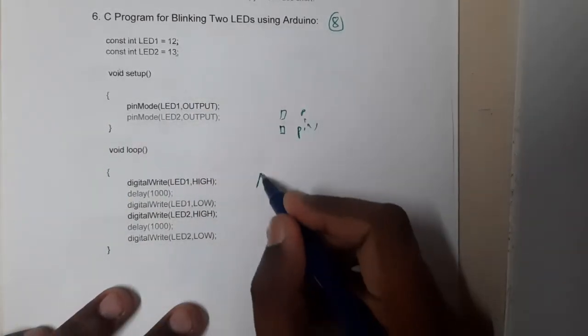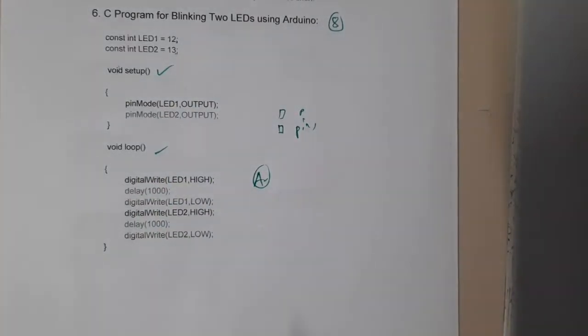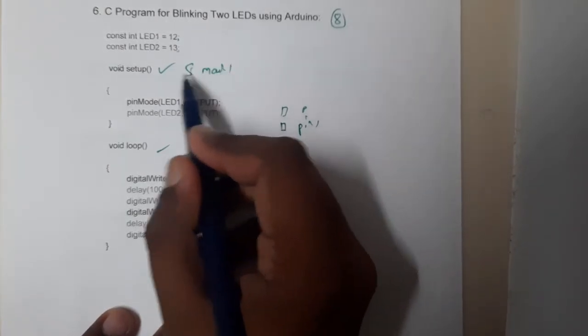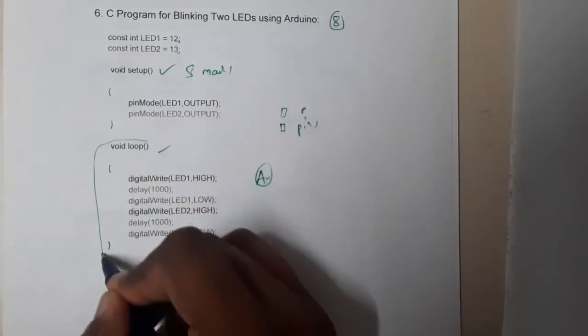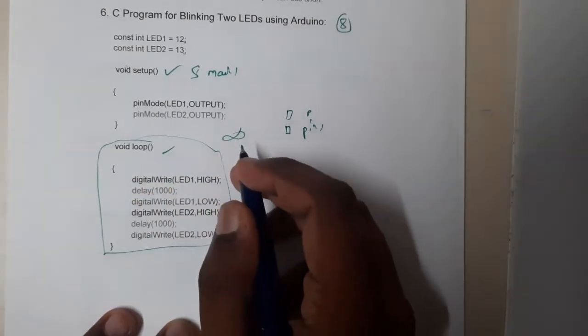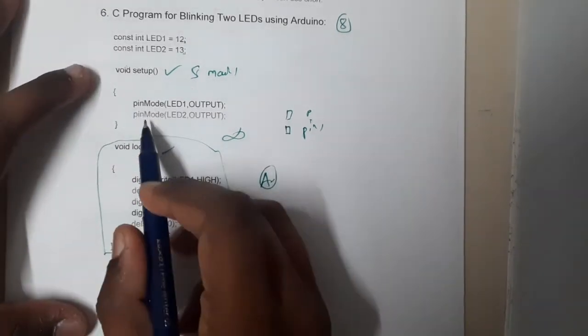Setup is like how we write main—it's the start. Loop will run infinite times until some termination occurs. So this is the setup and loop. Here we are creating two pins, LED1 and LED2, as outputs.